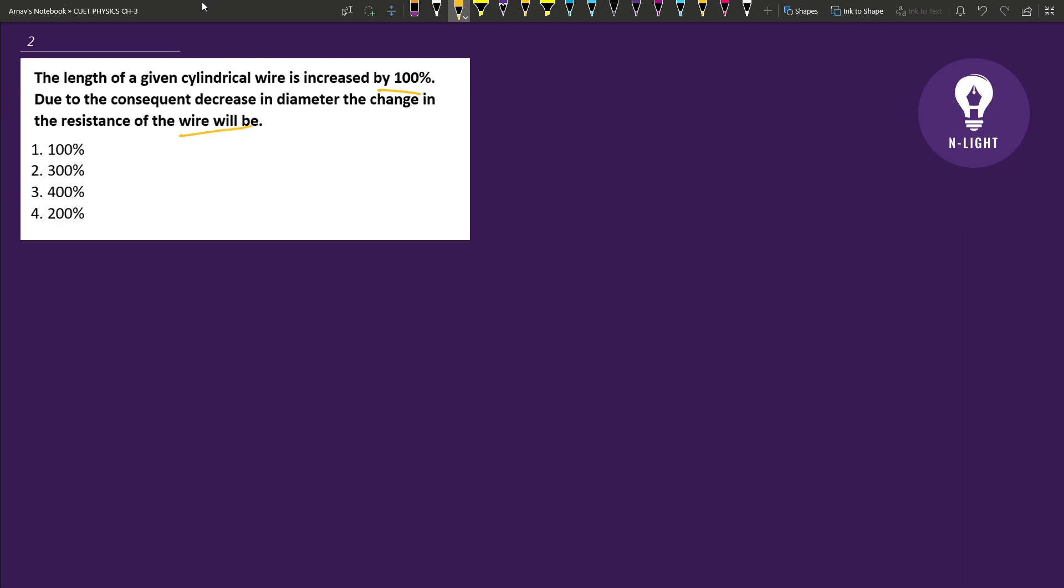Here we have to find the change in the resistance and we have given what we have done. We have the length that is 100% increased. If I write the initial resistance that was R, it is equal to ρL by A.